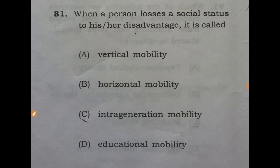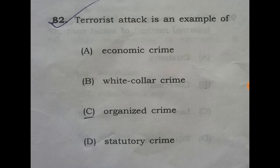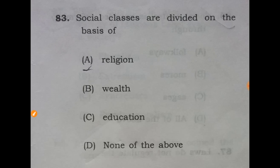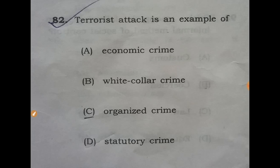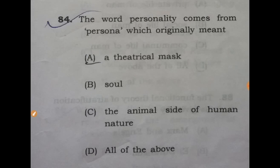Question 82: a terrorist attack is an example of — the answer is C: organized crime. Question 83: social classes are divided on the basis of — the answer is B: wealth. Question 84: the word 'personality' comes from 'persona,' which originally meant — the answer is A: a theatrical mask.